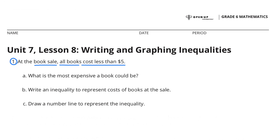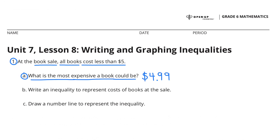At the book sale, all books cost less than $5. The most expensive a book could be would be $4.99, since all the books cost less than $5.